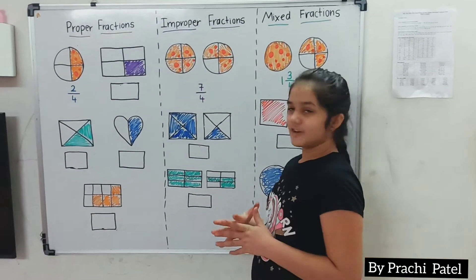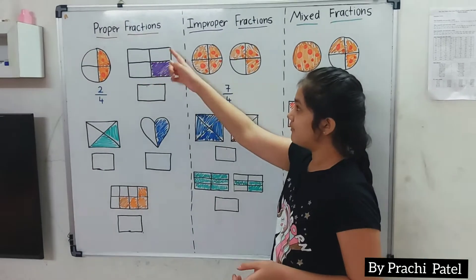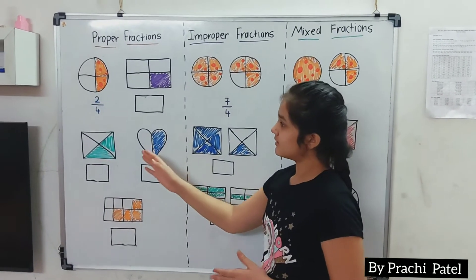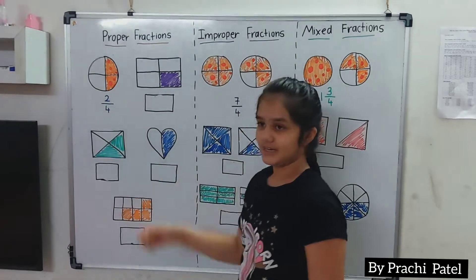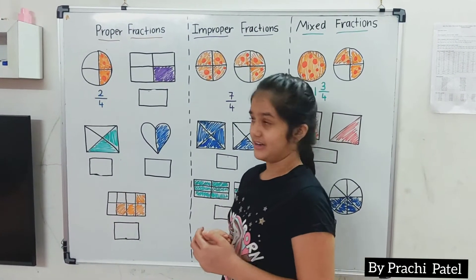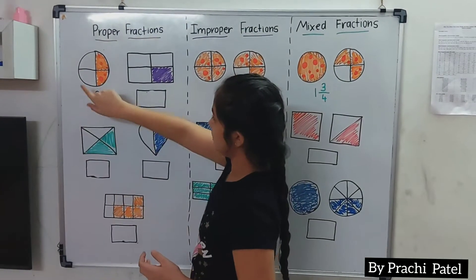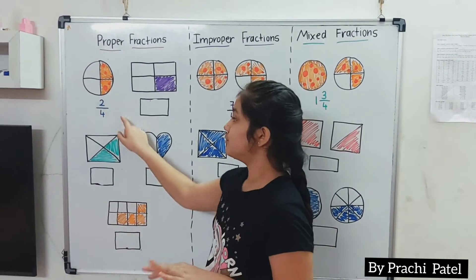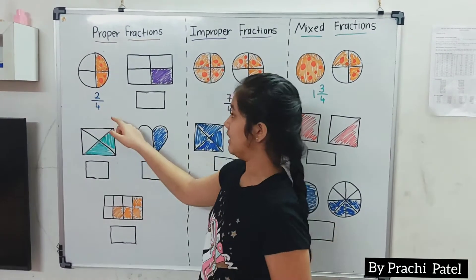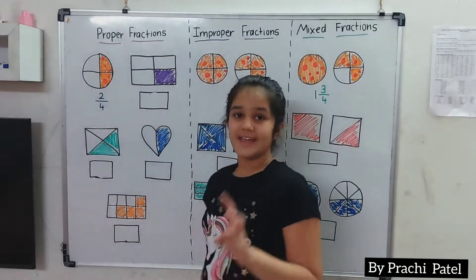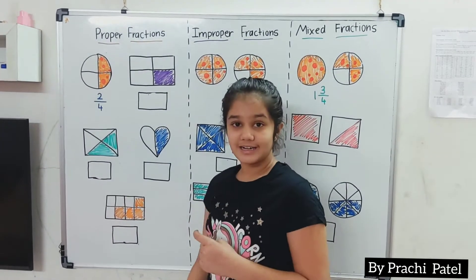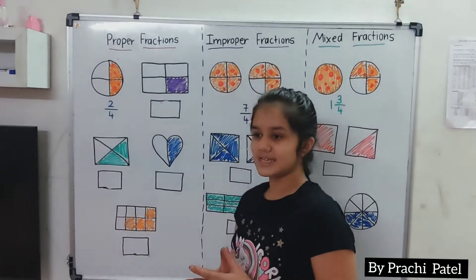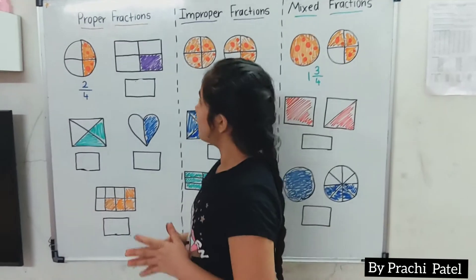First we will start with the proper fraction. What is a proper fraction? A proper fraction has a denominator bigger than the numerator. Like you can see here, we have 4 pieces of the pizza. So we write 4 in the denominator, and we have 1 and 2 colored on top, so we write 2 in the numerator. So this is the fraction.